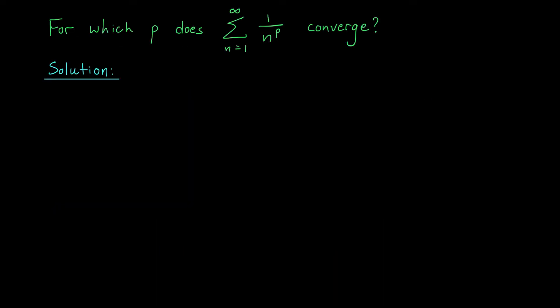We're trying to figure out which real numbers p we can put in this exponent to get a convergent series. We know that p equals 2 works, but what else? One thing we know is that if the series converges, the terms have to tend to zero — that's our test for divergence. It's a necessary condition for convergence. So to get started, let's ask: for which values of p do these terms tend to zero?